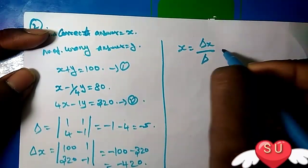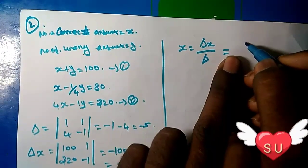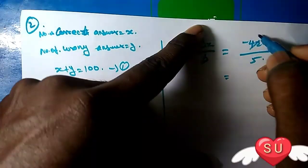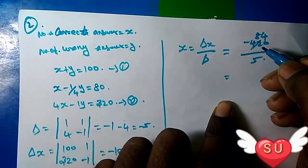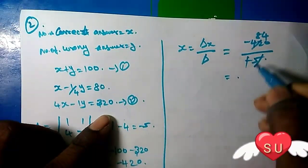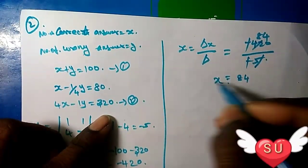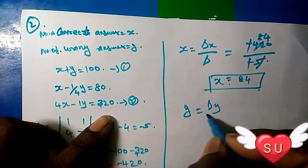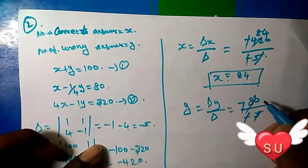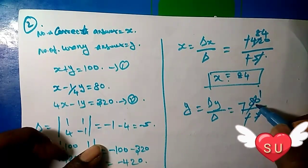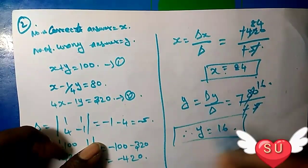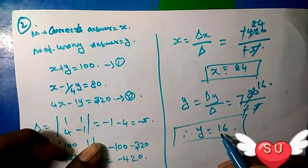Now x equals delta x divided by delta, which is minus 420 divided by minus 5, so minus cancels and we get 84. Therefore x equals 84 questions. Y equals delta y divided by delta, which is minus 80 divided by minus 5 equals 16. Therefore y equals 16. So the correct answer is 84 questions right and 16 questions wrong gives 80 marks.